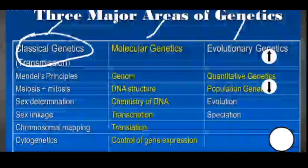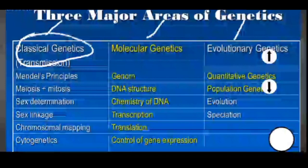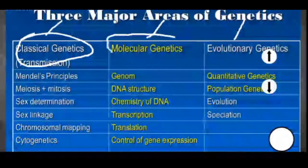Classical genetics covers Mendelian and non-Mendelian crosses, Mendel's principles, meiosis and mitosis, sex determination, sex linkage, chromosomal mapping, and cytogenetics. That is the first area of study under genetics.